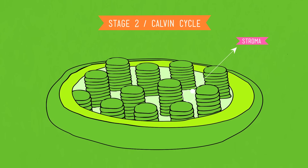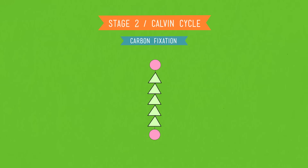Stage two is all about using the energy from the ATPs and NADPHs created in stage one to produce something actually useful for the plant. The Calvin Cycle begins in the stroma — the empty space inside of the chloroplast. This phase is called carbon fixation, because we're about to fix a CO2 molecule onto our starting point, ribulose bisphosphate, or RUBP, which is always around in the chloroplast because it's both the starting point and the end point of the Calvin Cycle. CO2 is fixed to RUBP with the help of an enzyme called ribulose-1,5-bisphosphate-carboxylase-oxygenase, which we generally shorten to RuBisCO.